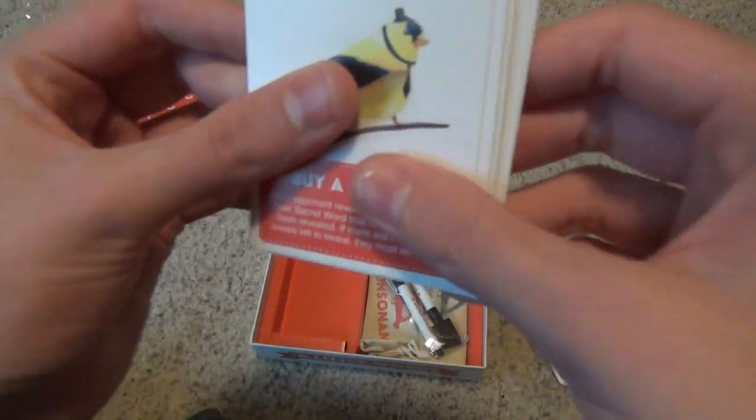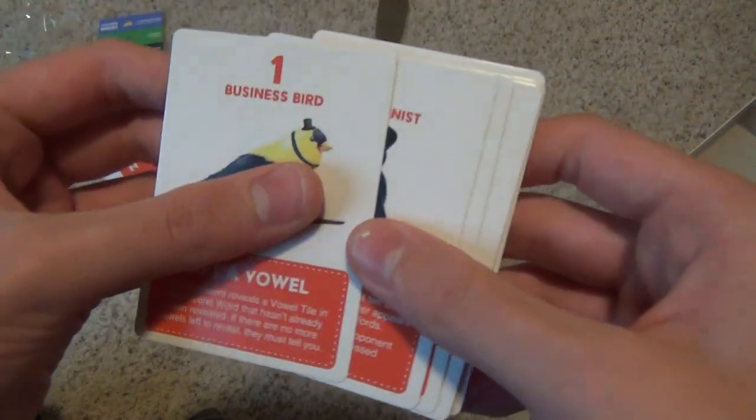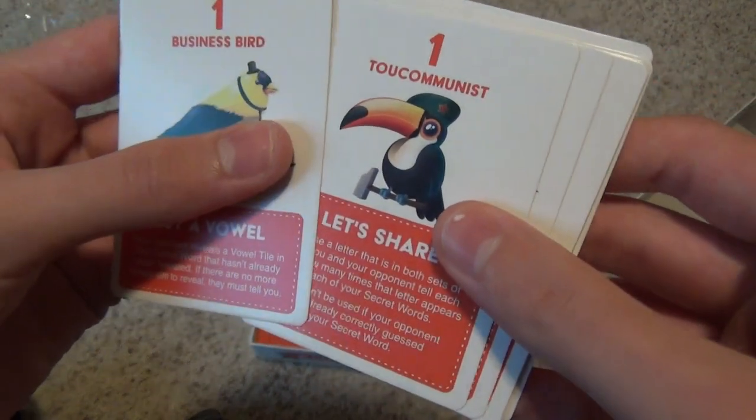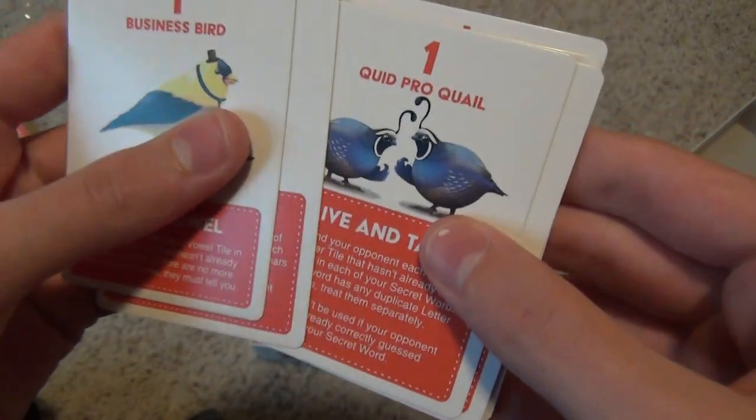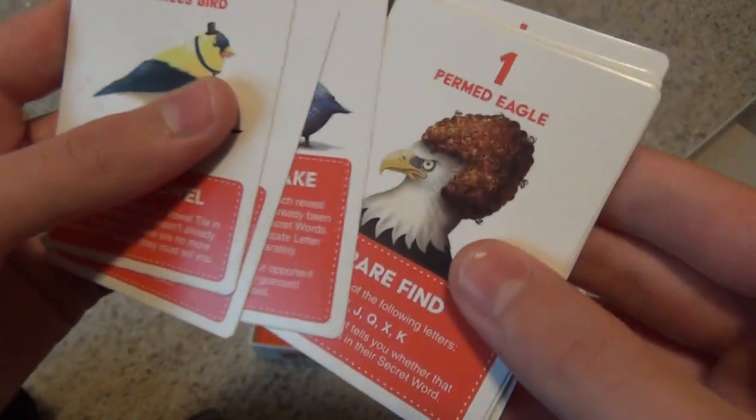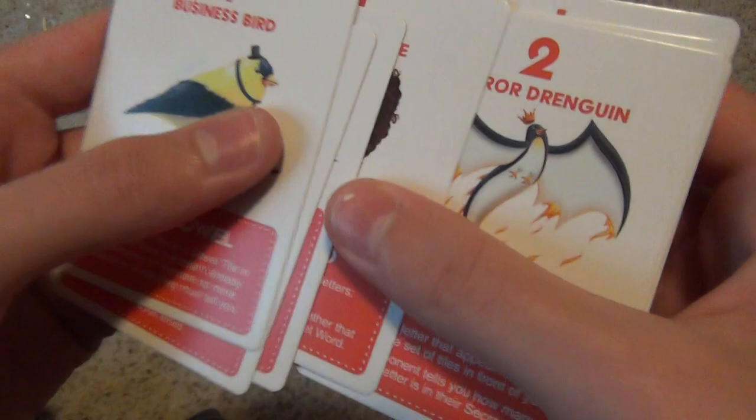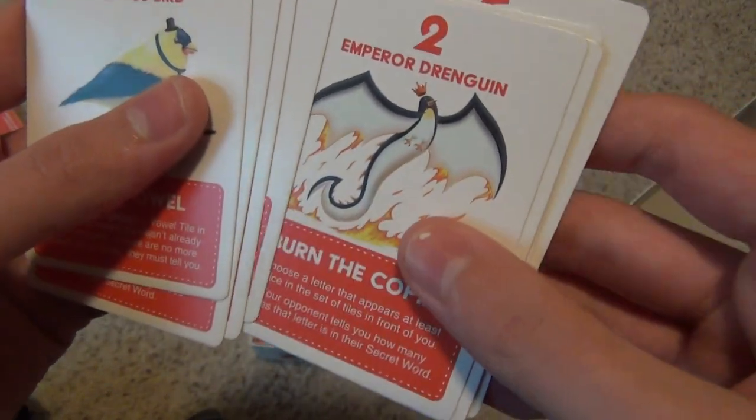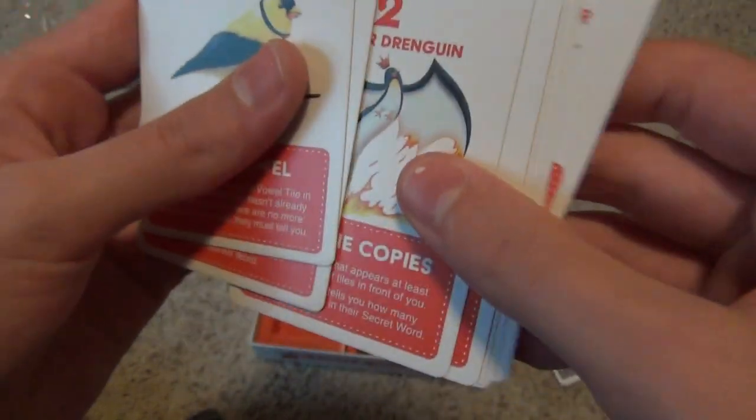Okay, so then we got the spicy ones. Buy a vowel, which is business bird to communist. Let's share. Quid pro quail, give and take. Rare fine, permed eagle. Emperor Drangren, burn the copies.